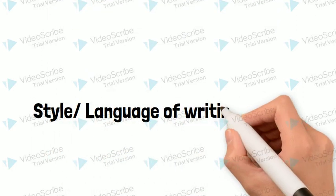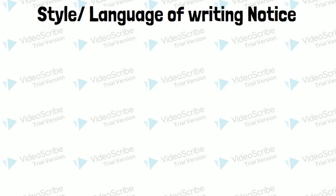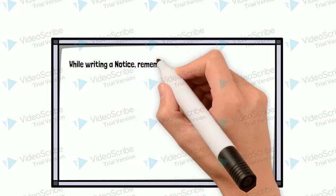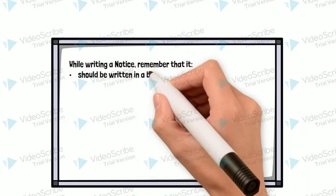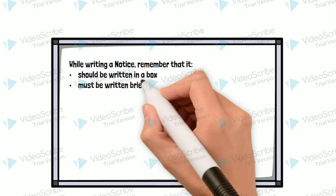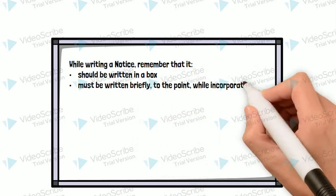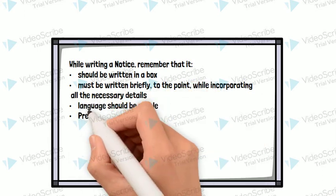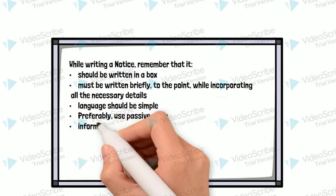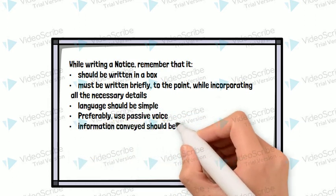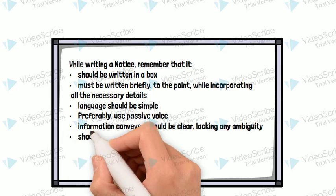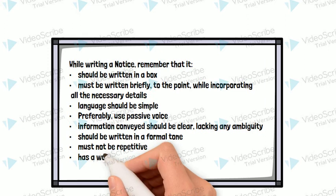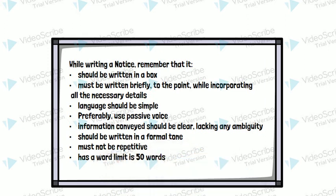Now let's read about the language and style of writing a notice. While writing a notice, remember that it should be written in a box. It must be written briefly and to the point while incorporating all the necessary details. Language should be simple. Preferably use passive voice. Information conveyed should be clear, lacking any ambiguity. It should be written in a formal tone, must not be repetitive, and has a word limit of 50 words.